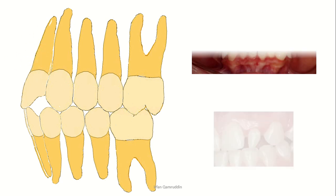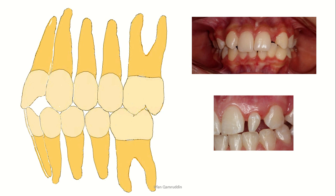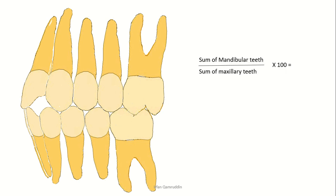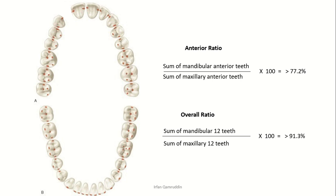Assume that a tooth is missing in the maxilla — for example, a missing or peg-shaped maxillary lateral incisor. How does this affect the Bolton discrepancy? Since the size of the maxillary teeth has been reduced, the overall ratio will increase, meaning the Bolton discrepancy will increase. The anterior ratio will be more than 77.2% and the overall ratio will be more than 91.3% because of the smaller maxillary teeth value.